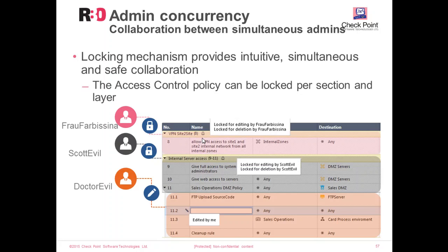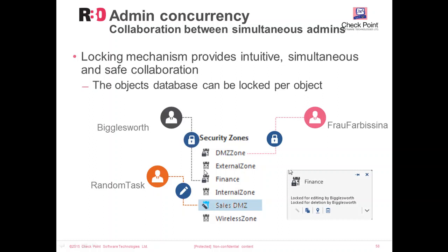The locking mechanism for objects works straightforwardly. RandomTask is editing the sales object while Frau Frabezina is editing the DMZ zone. RandomTask sees a pen icon on the object he's editing and lock icons on objects being edited by others. Hovering the mouse over a lock icon reveals who the other administrator is. As soon as Bigelworth presses Publish, those changes are announced to all other administrators, the lock icon disappears, and RandomTask can see the new information entered by Bigelworth.